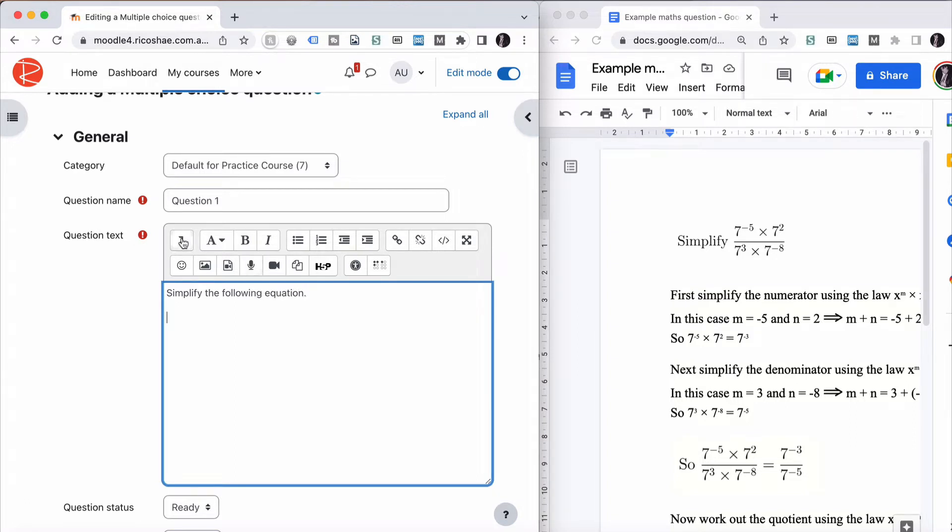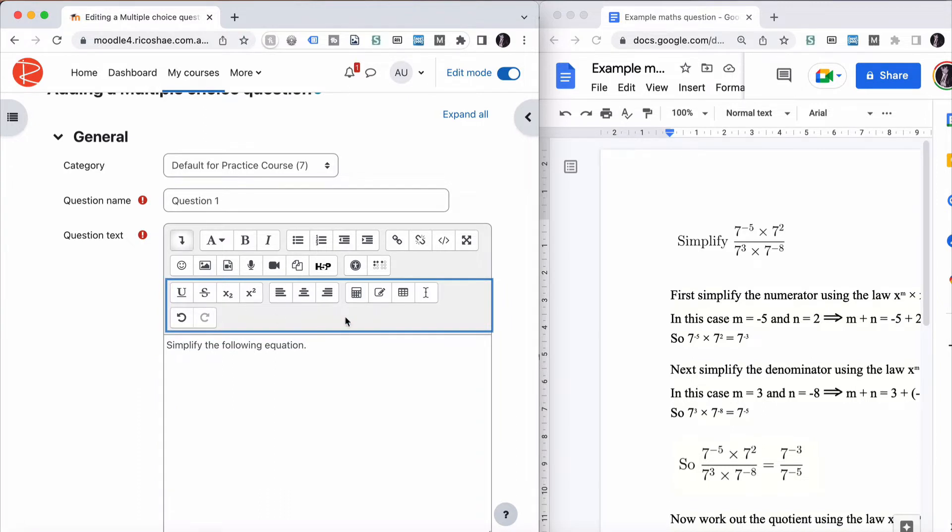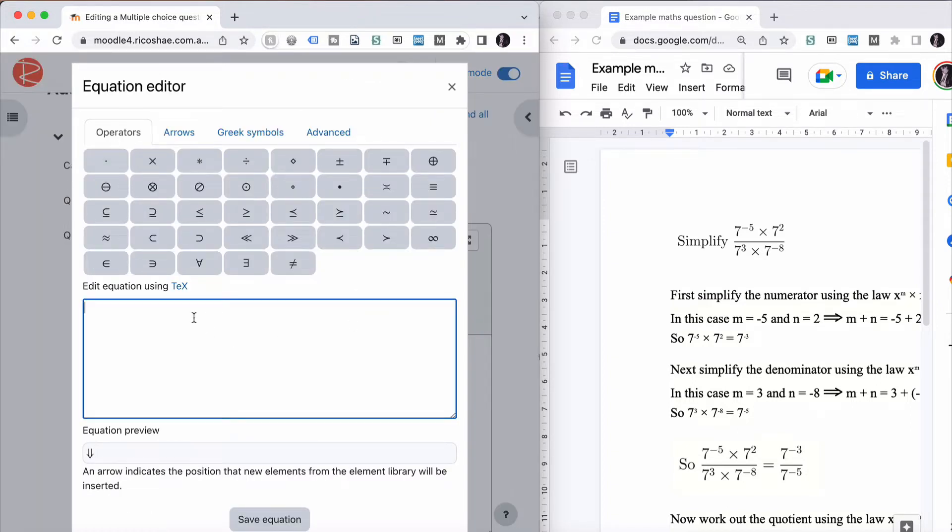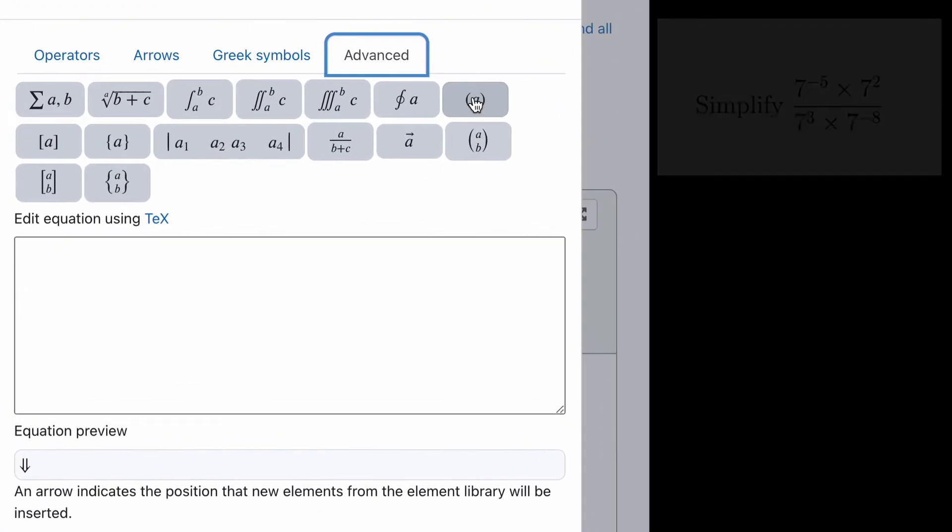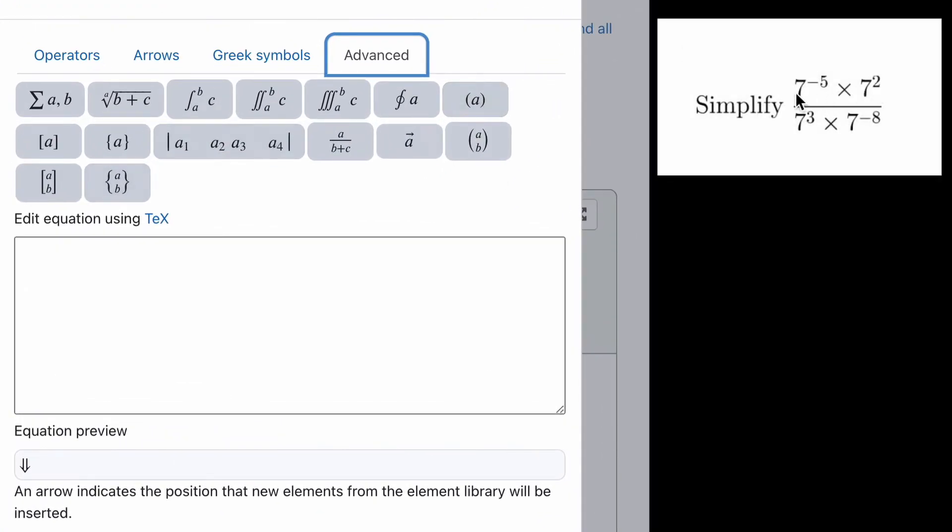You may or may not have noticed this, but inside most Moodle platforms, there is a thing called the equation editor. When we click on the equation editor, it comes up with this, which looks a little bit scary. But if we click on advanced, you'll see something that looks a little bit more familiar for you. In there, what we're looking for is something that is sort of similar to this particular layout just here.